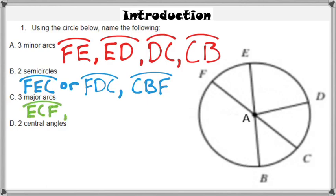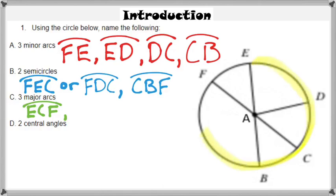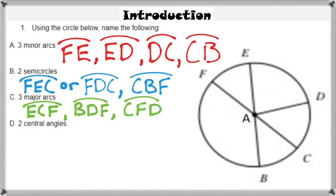A major arc is an arc that is greater than 180 degrees. ECF is an example of a major arc — it is greater than 180 degrees. Three letters must be used to name a major arc: you start at the first letter E, go in the direction of the second letter C, and end at F. Other major arcs include BDF and CFD. A major arc is greater than 180 degrees; a minor arc is less than 180 degrees.